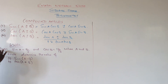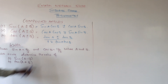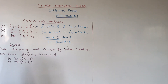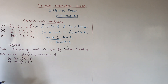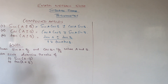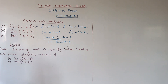We have given: sine of A is 4 over 5, cosine of B is 12 over 13, where A and B are acute. These are very important pieces of information. Determine the values of sine of A minus B, and tan of A plus B.